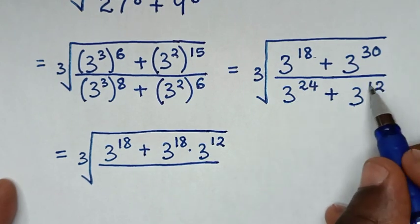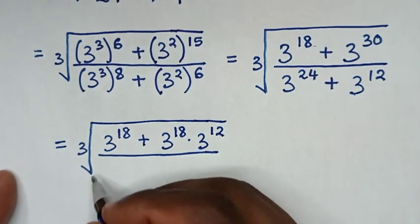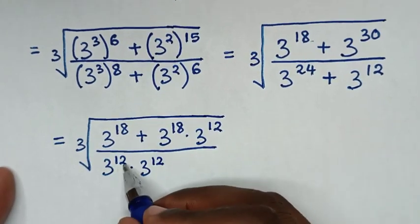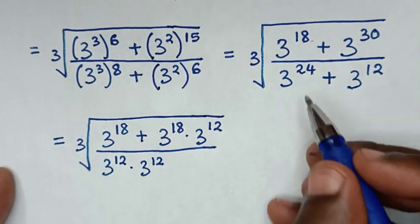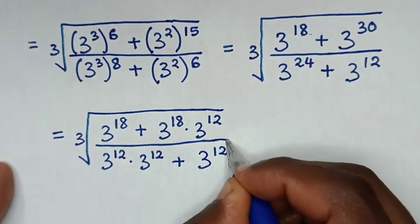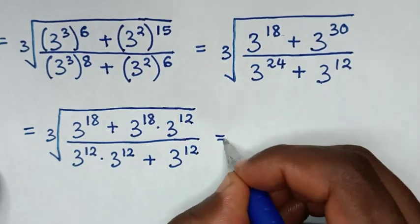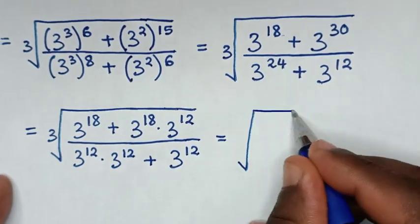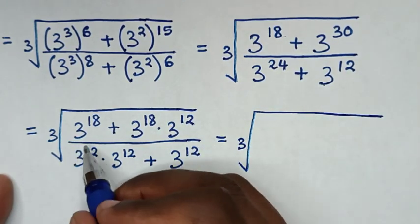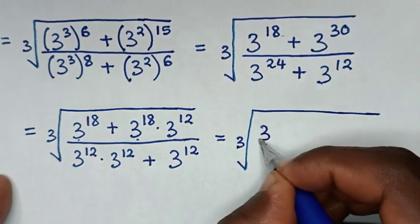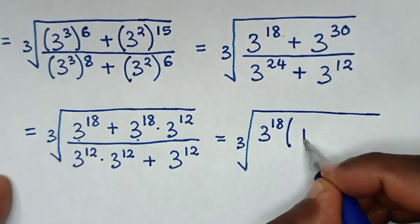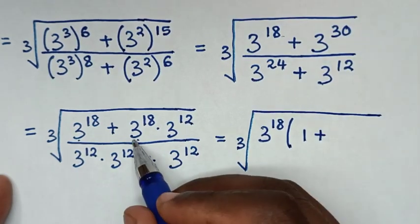In the denominator, 3 power of 24 is same as 3 power of 12 times 3 power of 12, as power of 12 plus 12 is power of 24, then plus 3 power of 12. It will be equal to cube root of: in the numerator 3 power of 18 is common, so take 3 power of 18 out of bracket. This divided by this is 1 plus 3 power of 12.